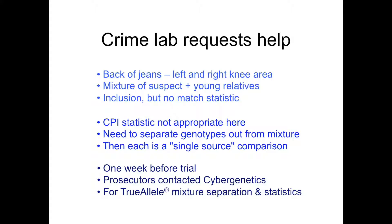There was a need to separate out the genotypes from these mixture samples. By separating out the genotypes, the problem is turned back into a single source comparison of one component of the evidence to just one reference sample. When you compare one genotype from evidence to one individual, this is a single source comparison, like a random match probability, that is much simpler mathematically, conceptually, and to explain.